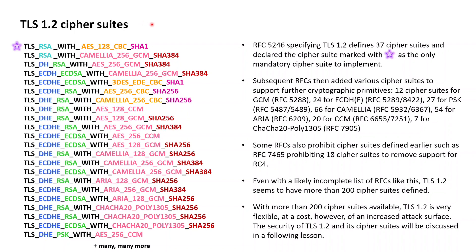The original specification of TLS 1.2 as given by RFC 5246, released back in 2008, defined a set of 37 cipher suites and declared that the only cipher suite mandatory to implement is the first cipher suite listed at the top, which is a cipher suite that uses RSA for both the key exchange and the authentication of the server.